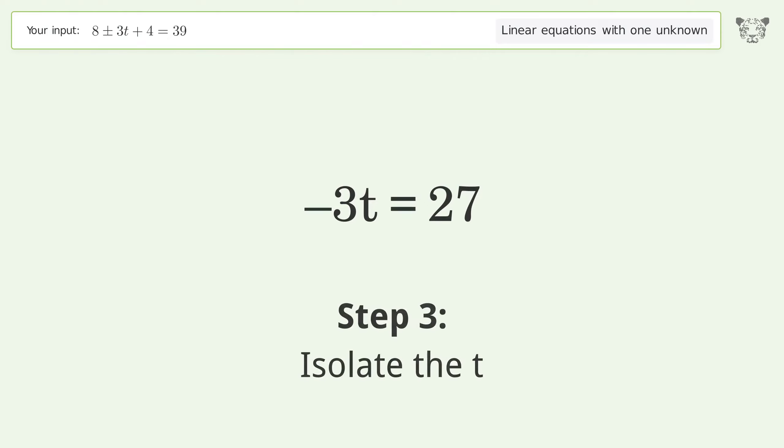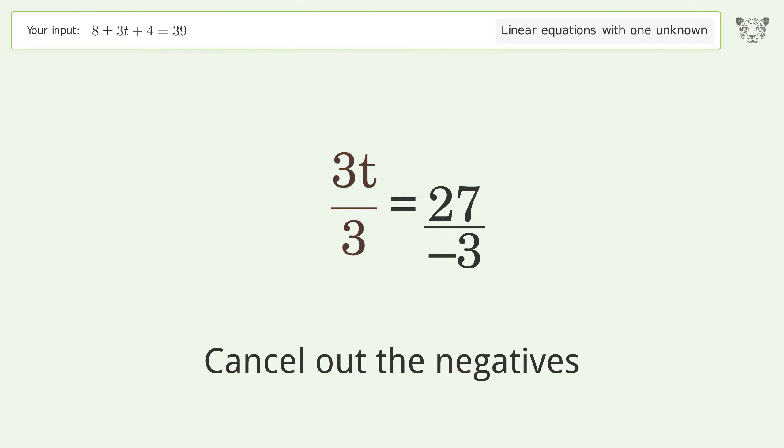Isolate the t. Divide both sides by negative 3. Cancel out the negatives. Simplify the fraction.